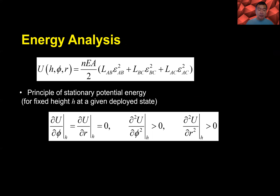Energy depends on height H, angle phi, and radius R. For a given height H, or a given deployed state, we minimize in terms of phi and R to get the equilibrium state.